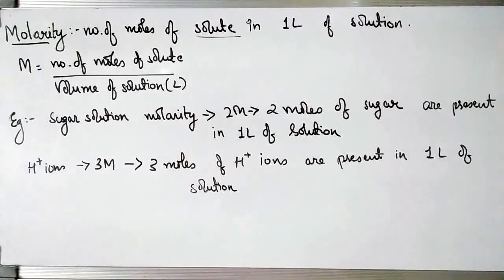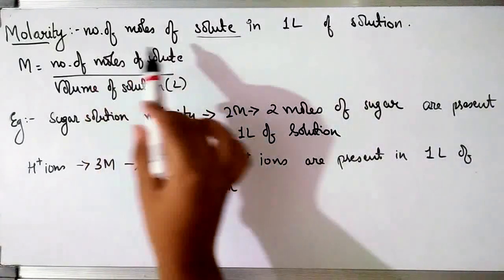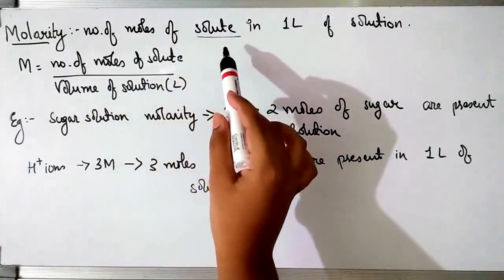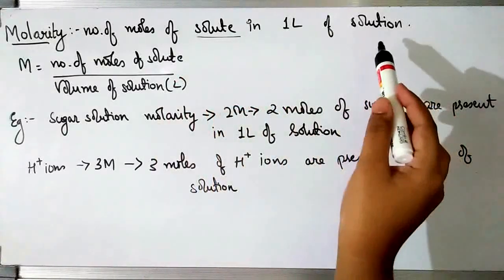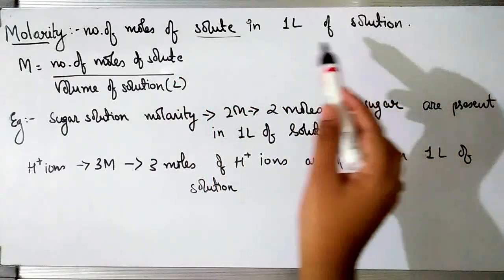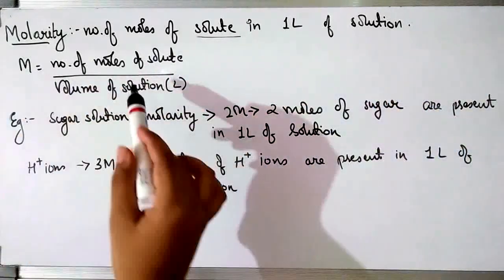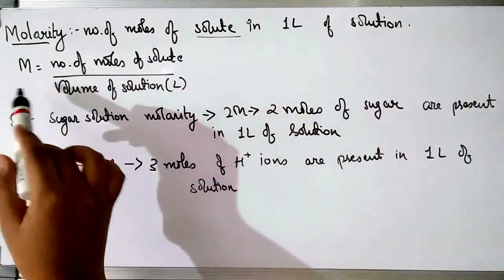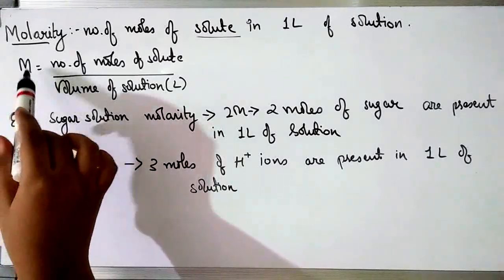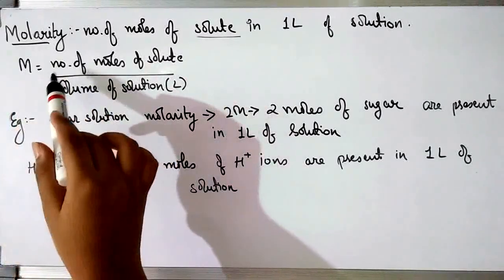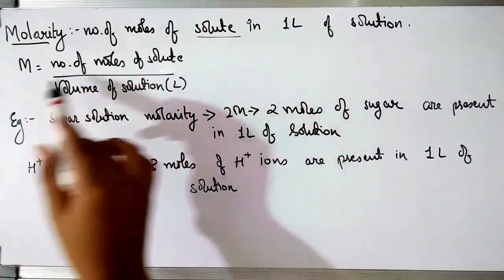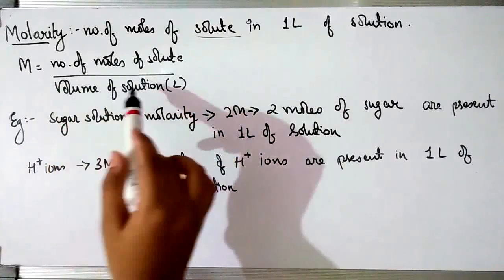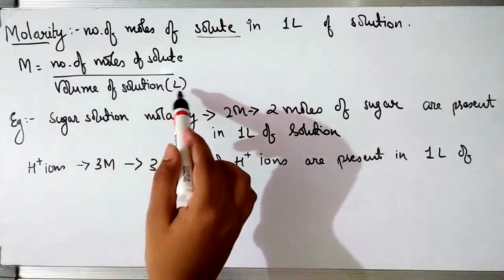So what is molarity? Molarity means the number of moles of solute present in one litre of solution. The formula is: molarity, which is denoted by capital M, equals the number of moles of solute upon volume of solution in litres.